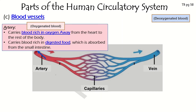The artery carries blood away from the heart to the rest of the body. Because the blood passes by the lungs, it carries all the oxygen you inhale into your lungs to the rest of the body. So the artery carries blood rich in oxygen - what we call oxygenated blood. Besides oxygen, it also carries nutrients and water to the rest of the body where cells will absorb all this.